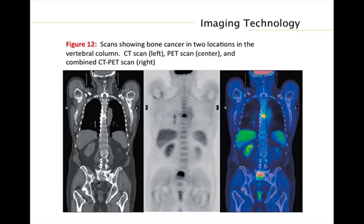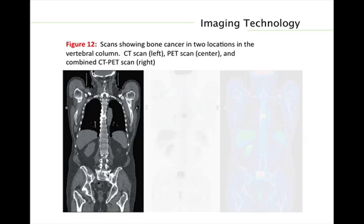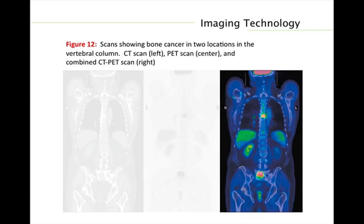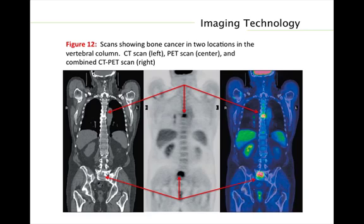We will now observe the image technology shown in Figure 12. A CT scan produces images of a series of thin cross-sections through the body. A PET scan is an imaging technology that differs from a CT scan in that it yields information about metabolic processes at a specific location in the body; it pinpoints metabolic hot spots by highlighting the sites of most intense radiation with a radioactive isotope. The last image is a combination of both the CT scan and PET scan, where the arrows point at bone cancers shown in the images.